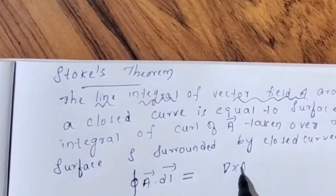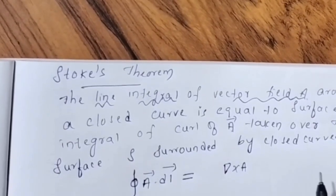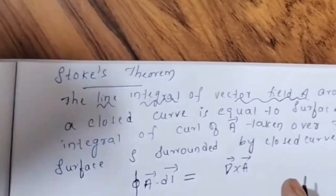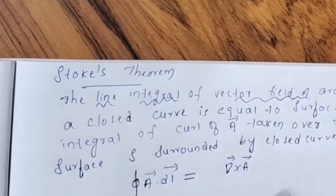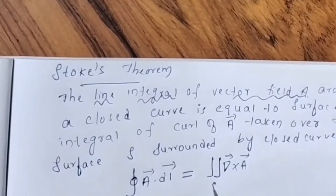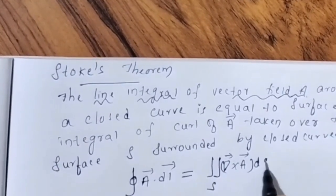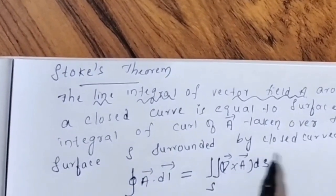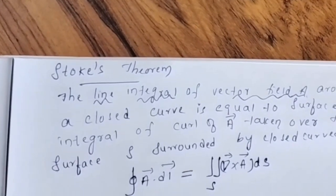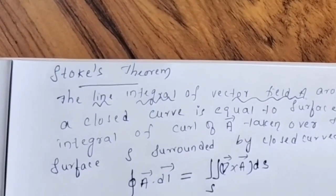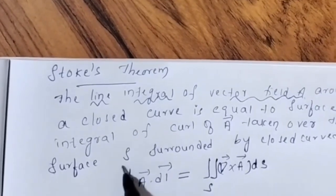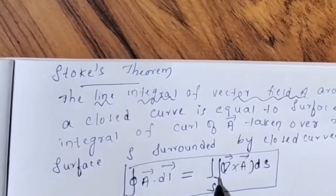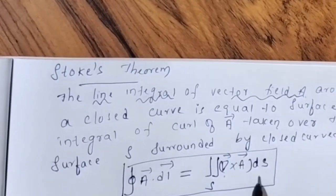Curl A is written as del cross A. So the surface integral of curl A taken over the surface S surrounded by the closed curve. Mathematically, it is written as: integral A dot dL equals surface integral of del cross A dot dS.